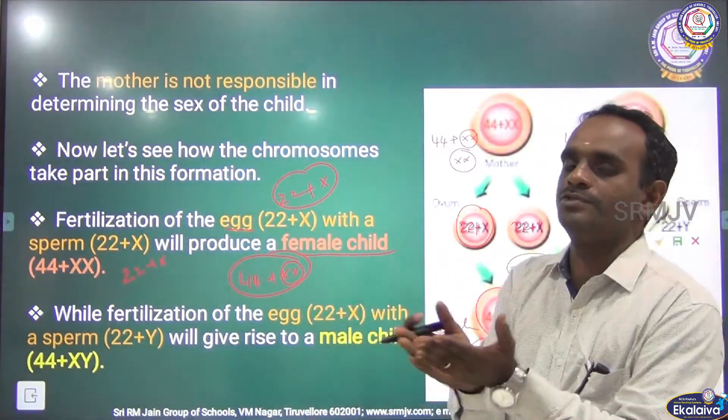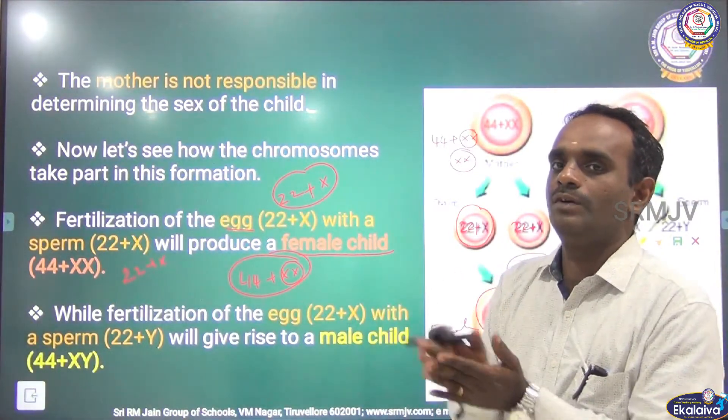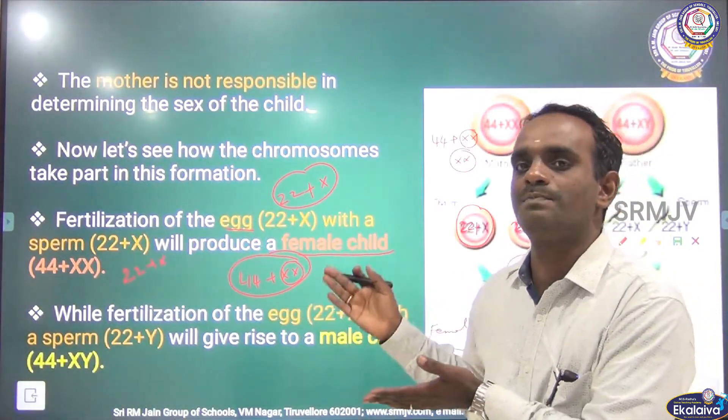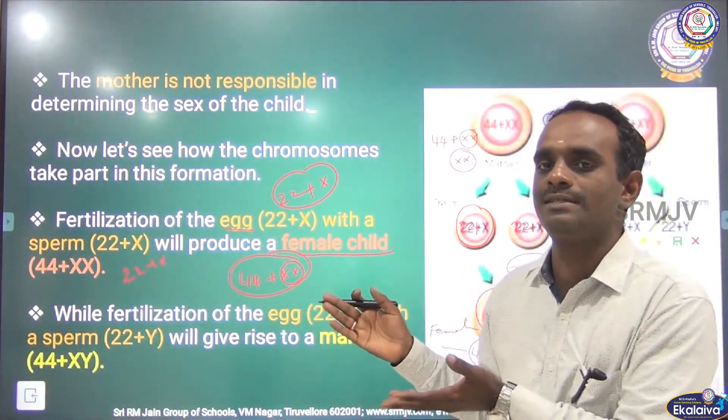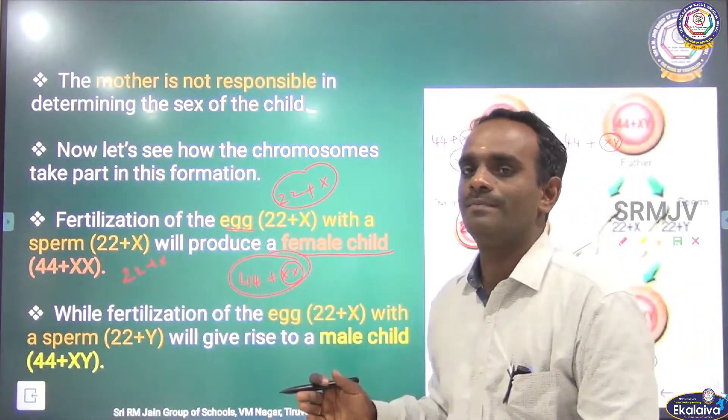X and Y fused together to form XY. If the chromosome has XY in the last pair, then it is male.